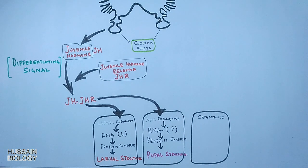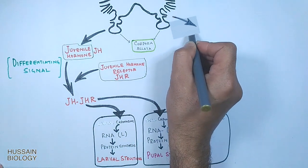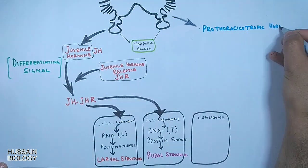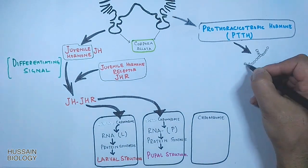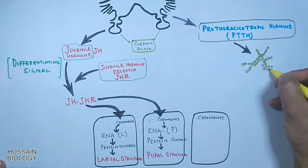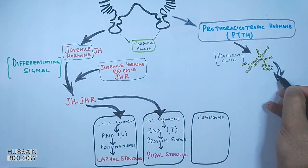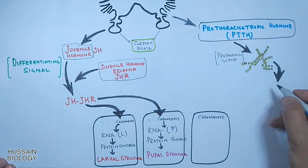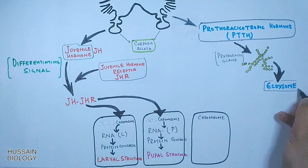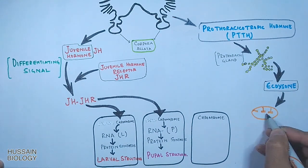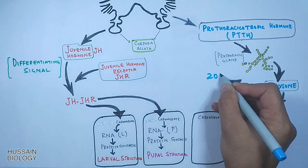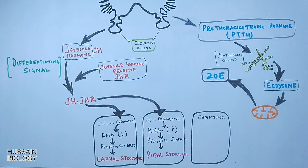Moving to the corpora cardiaca part of the brain: cells in this region secrete prothoracicotropic hormone (PTTH), which travels to the prothoracic gland and stimulates the secretion of ecdysone. This ecdysone then enters the mitochondria and is converted into 20-hydroxyecdysone.